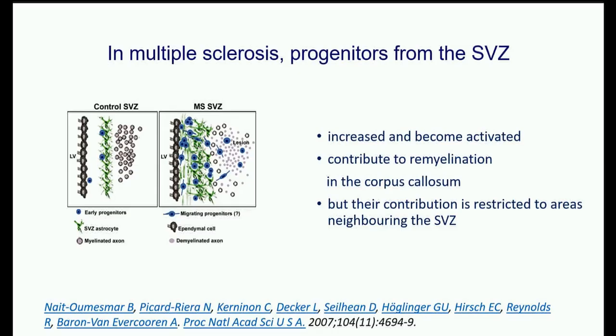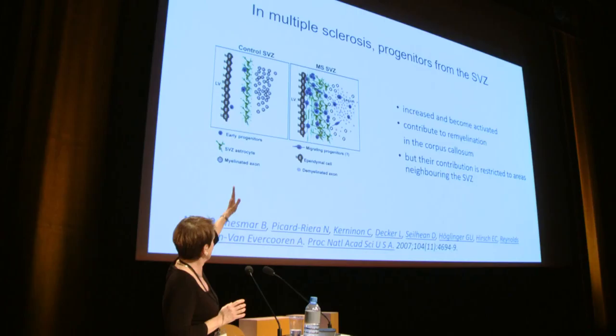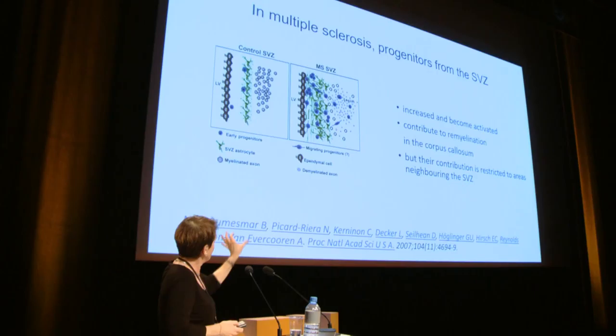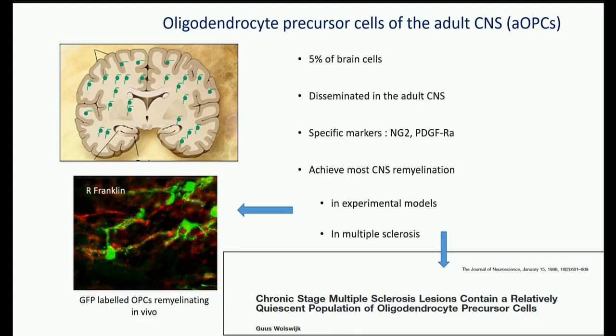Subventricular zone progenitors are highly contributing to remyelination of the corpus callosum, but their contribution is restricted to the area surrounding the ventricular layer. In addition to subventricular zone progenitors, the other key cell achieving remyelination is the oligodendrocyte precursor cell — also called adult OPC or parenchymatous OPC. These cells are disseminated in the adult CNS, representing up to 5% of total brain cells, and were largely ignored due to a lack of specific markers.